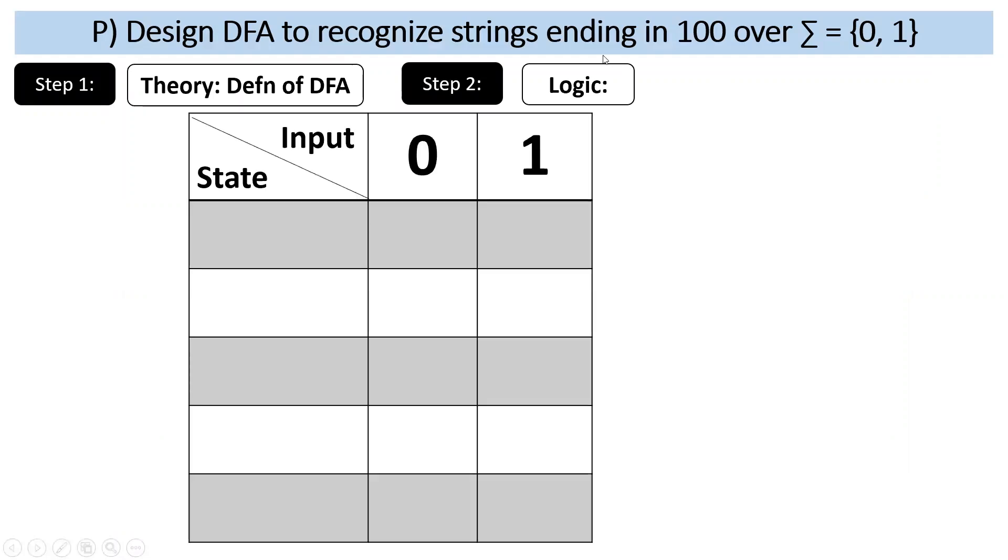Humare paas important words are ending in, ends with. Qs is the start state. Q0 ends with 0. Q1 ends with 1. This is minimum. Remaining will be decided based on your sequence. Your sequence is 1 0 0.